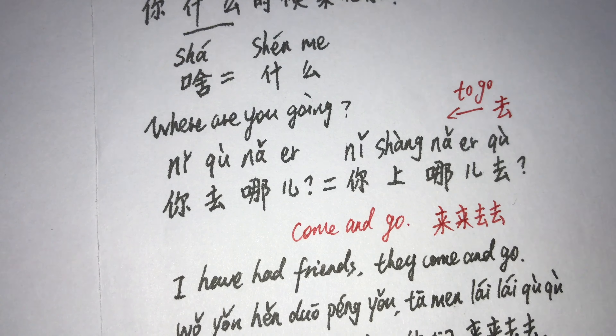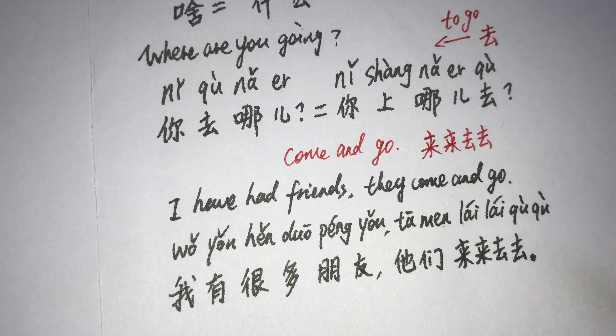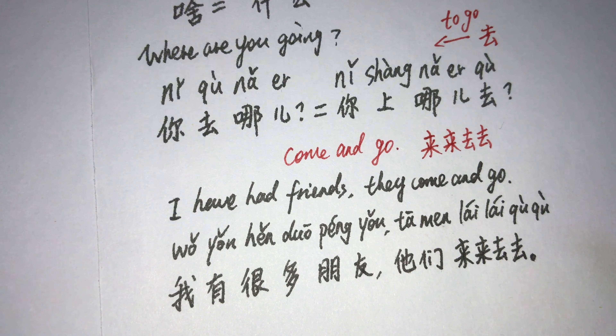来来去去 — come and go. I have had friends, they come and go. 我有很多朋友，他们来来去去。